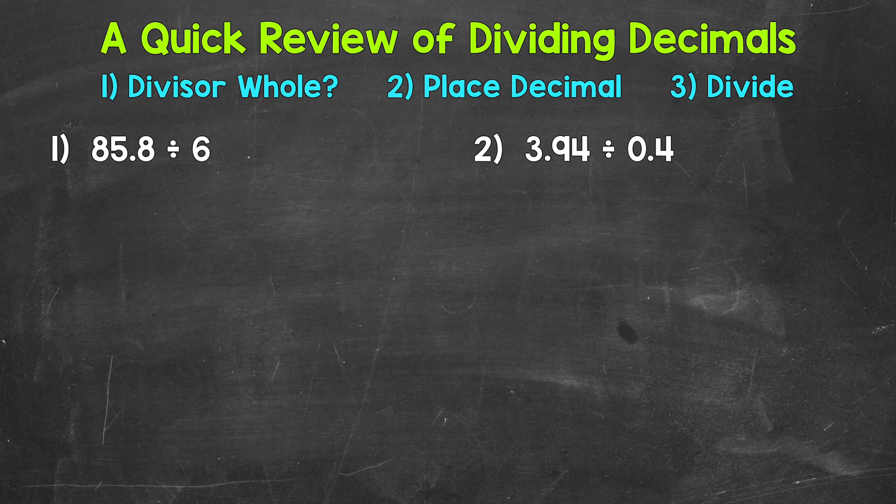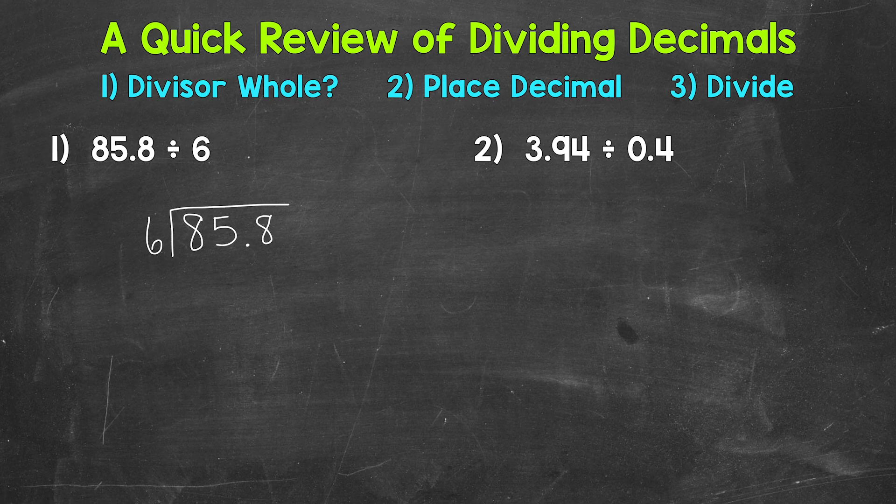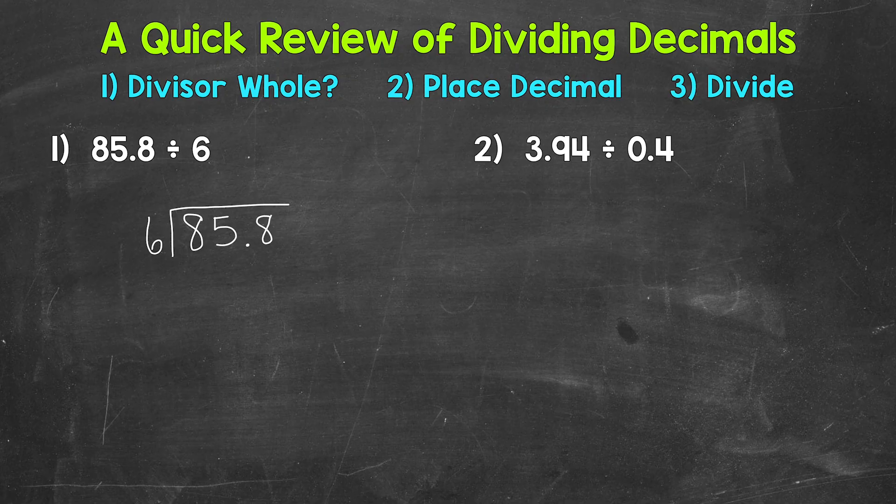For number 1, we have 85.8 for our dividend. That's the number we are dividing, so it goes under our division bar. So let's write out 85.8. And then we are dividing by our divisor of 6. So the divisor is the number we are dividing by. Once we get to this point and we are set up, we have a very important question.